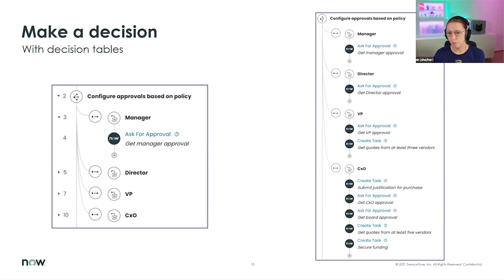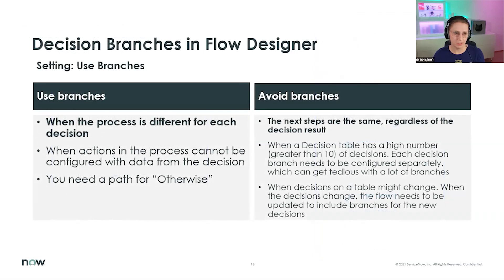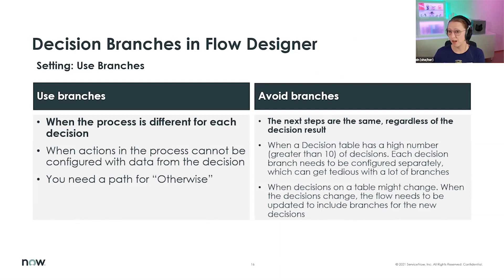When using branches, you can add multiple actions to create specific business logic for each result path — additional approvals, extra checks, additional tasks. The most obvious guidance: if the steps following the decision are the same in principle — ask for approval, create a task, change a state — then don't use branches. Just do your logic and use the output from the decision as your variables. However, if the process is very different or you need a catch-all 'Otherwise' path, you may want to branch.